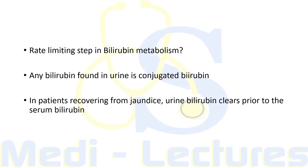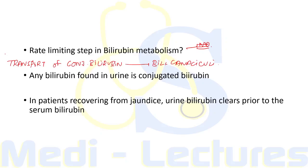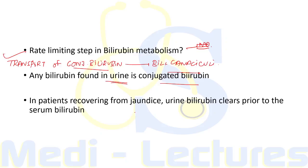The rate-limiting step in bilirubin metabolism is the transport of conjugated bilirubin into the biliary canaliculi — not conjugation. Any bilirubin found in urine is conjugated bilirubin, since unconjugated bilirubin is bound to albumin and will not be filtered by the kidney. In patients recovering from jaundice, urine bilirubin clears prior to serum bilirubin.